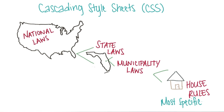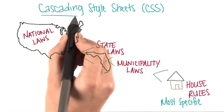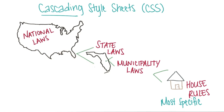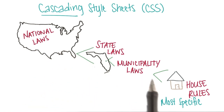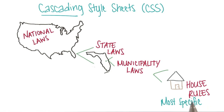This concept of the most specific rule being applied is what the word cascading means. You keep going down and down into the rules until you find the one that best describes the element, and then that rule gets applied.